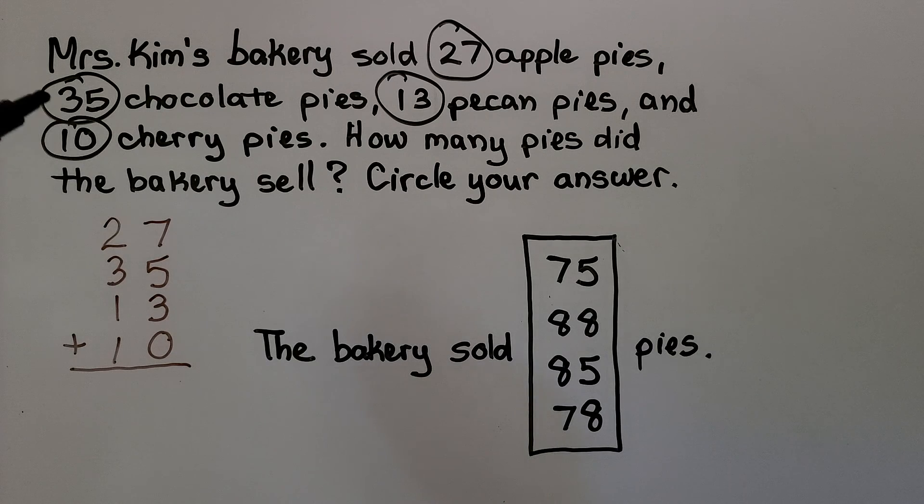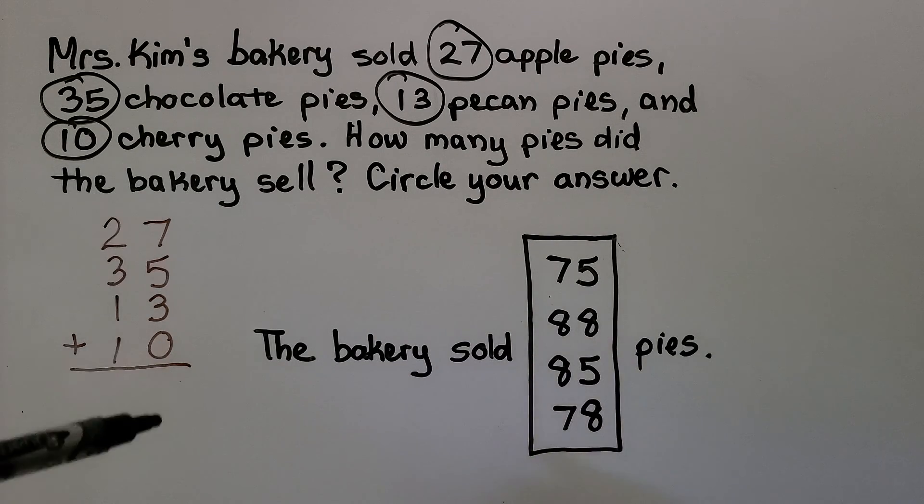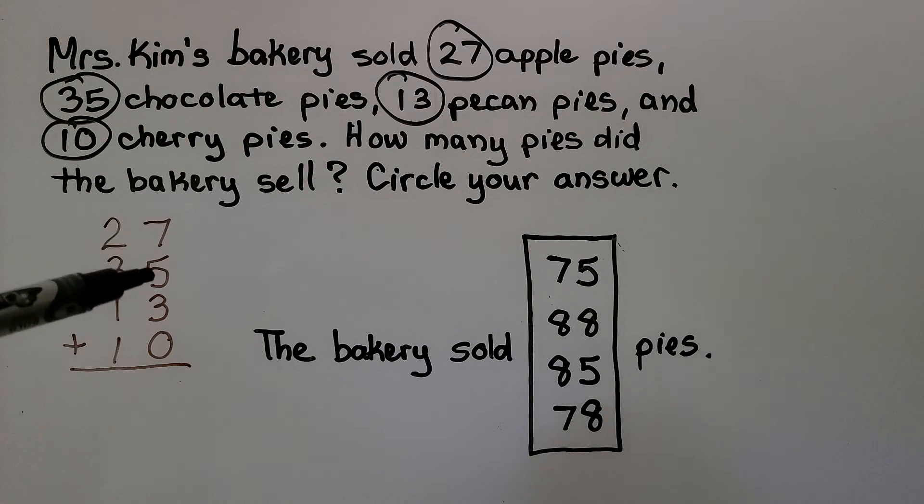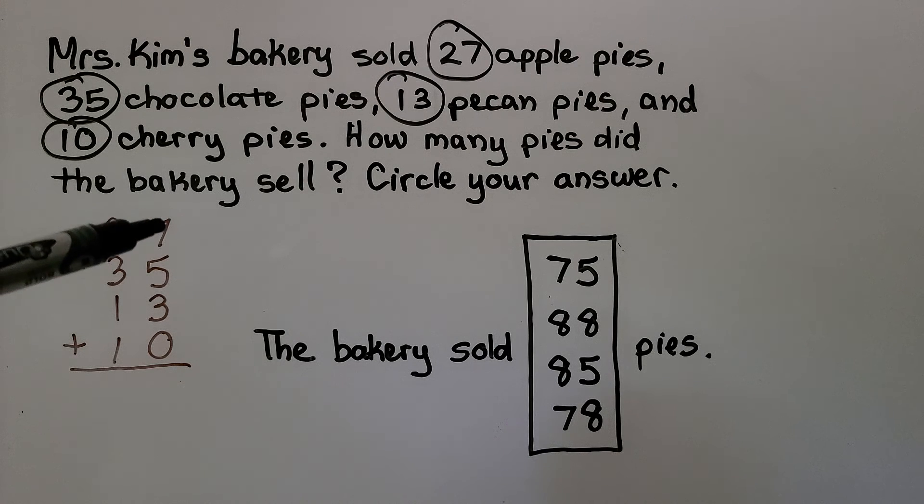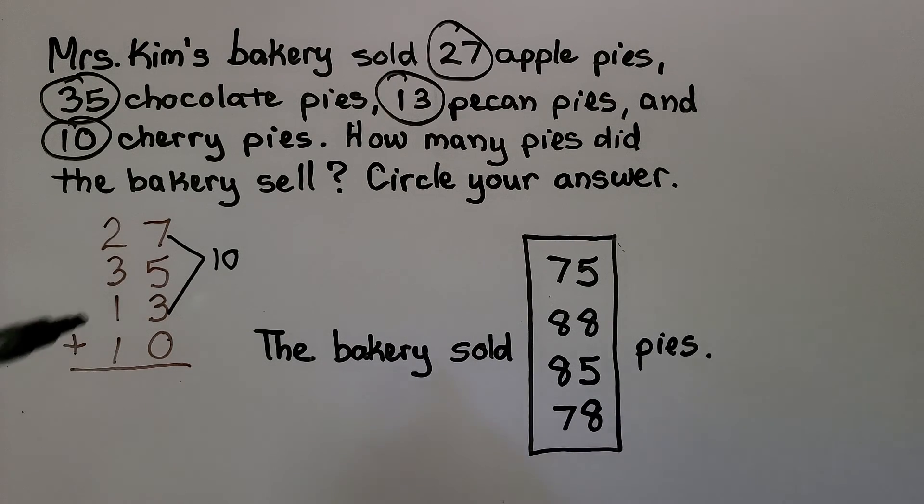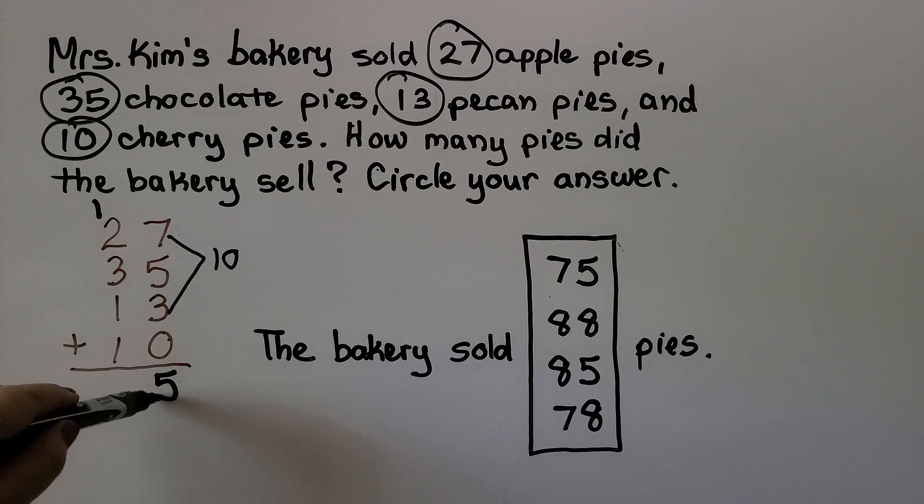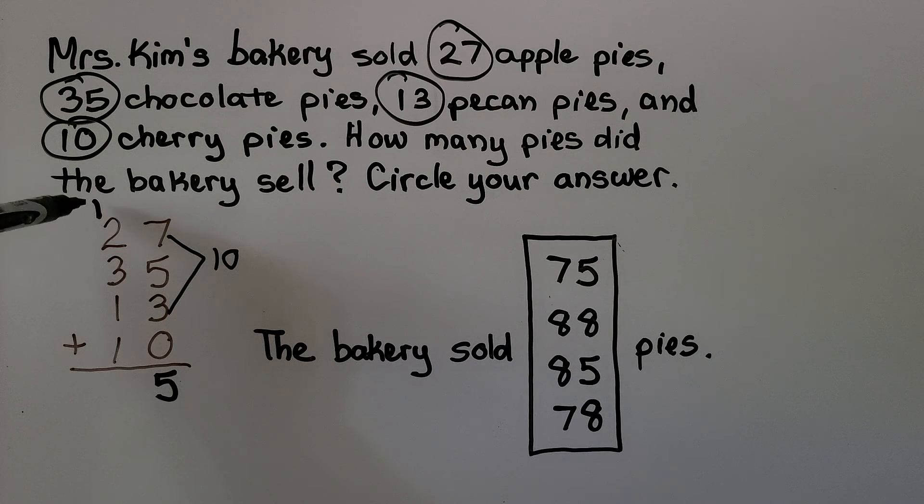27 plus 35 plus 13 plus 10. We start with the ones place. 7 plus 5—we can start here and just go down, but I see a 10. I see 7 and a 3. That makes a 10. Then we can add 5 more. We have 15 and 0, that's still 15. 15 is 1 ten, 5 ones. We regroup that 1 ten into the tens column.